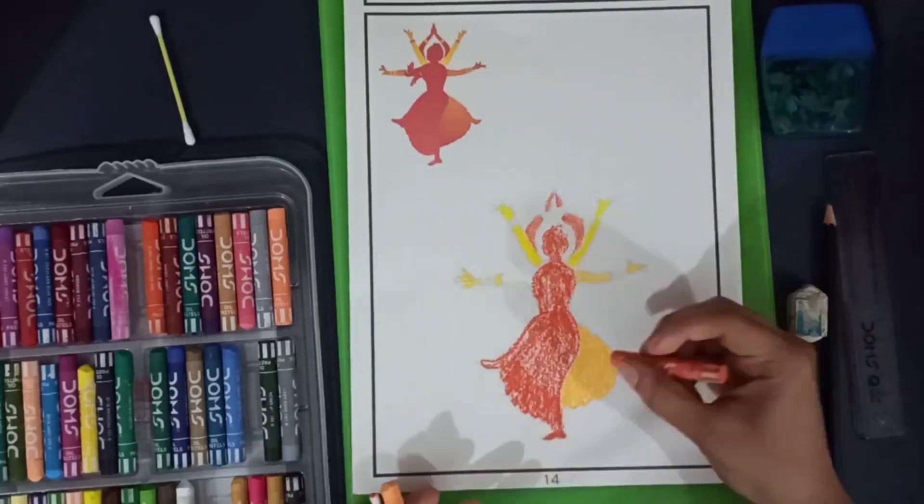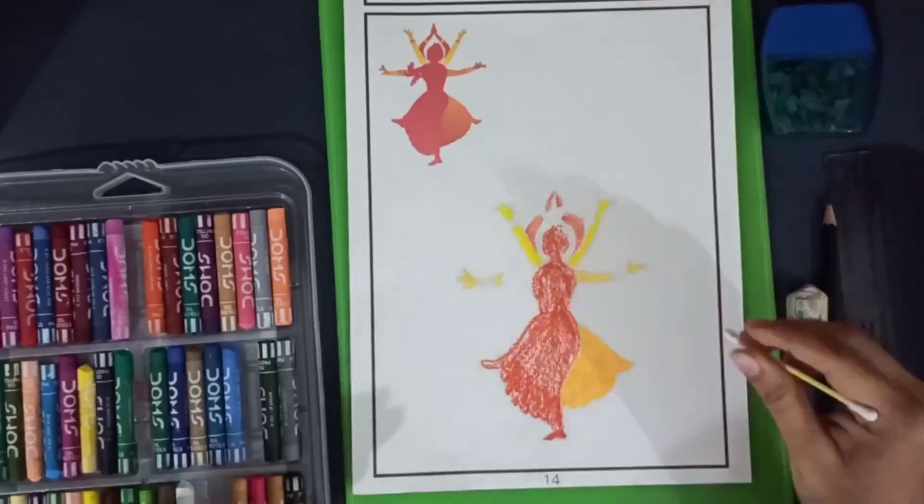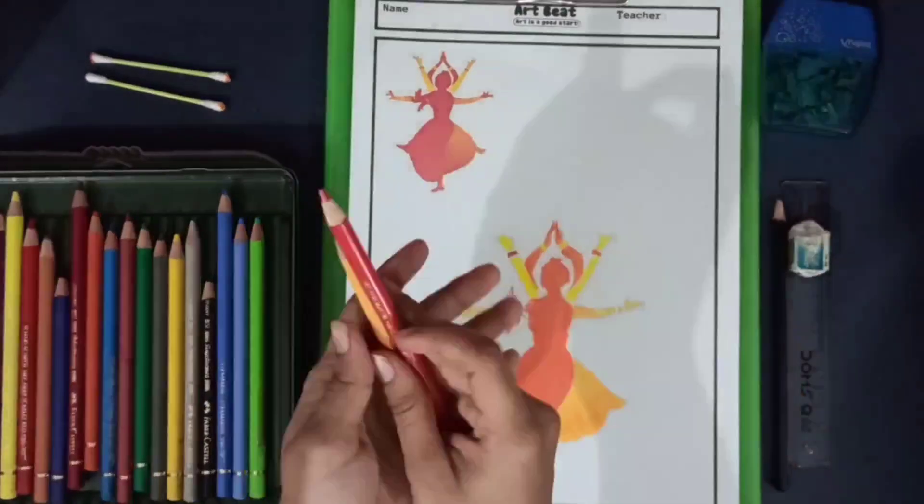Now I'm just coloring her dress and the legs, and make sure you blend it very smoothly. Now I have completed coloring.